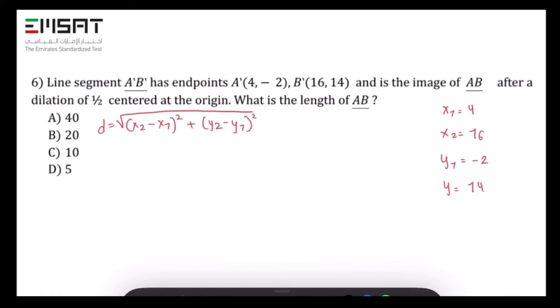Now let's plug our values in the formula. D equals square root of (x2 which is 16 minus x1 which is 4) squared plus (y2 which is 14 minus y1 which is negative 2) squared.